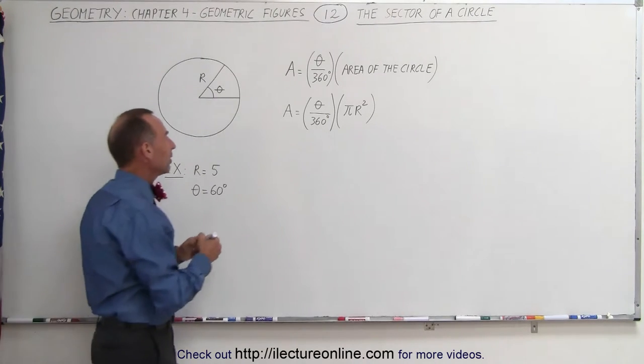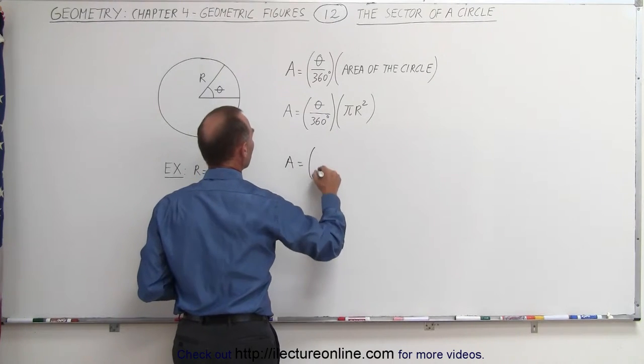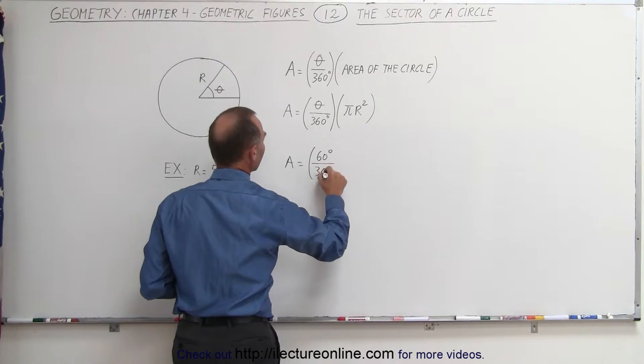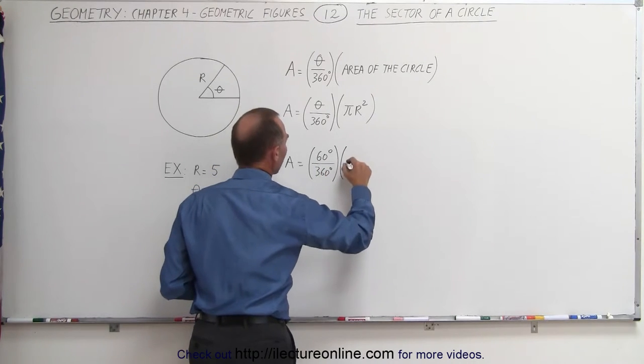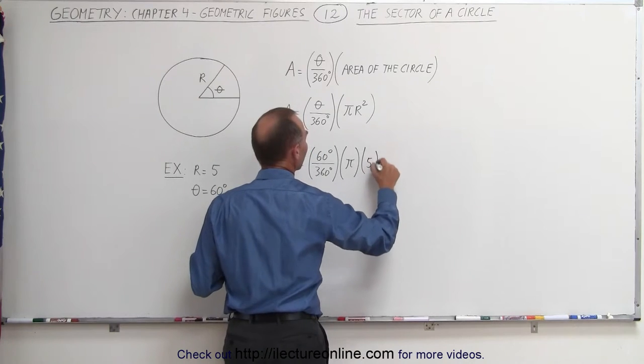Using the equation, we can say that the area is equal to, well, we have a 60-degree angle, divide that by 360 degrees, and multiply that times pi times r, which in this case is 5 squared.